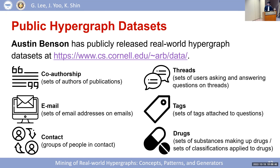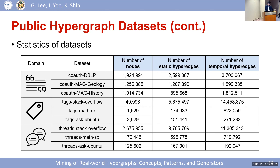There are many real-world hypergraph datasets open to the public, from different domains including co-authorship, email (where a set of email addresses receiving a single email forms a hyperedge), and drugs (where a set of substances making up a drug forms a hyperedge). These datasets have various numbers of nodes and hyperedges, and are typically provided with temporal information — the timestamp that each hyperedge arrived. For static analysis, we can simply ignore this temporal information.